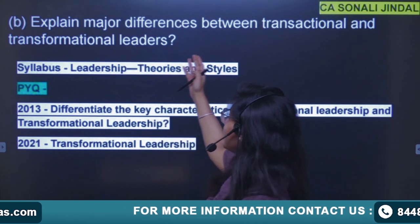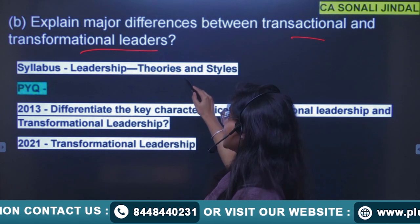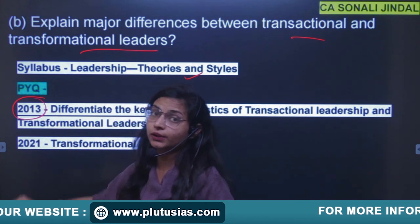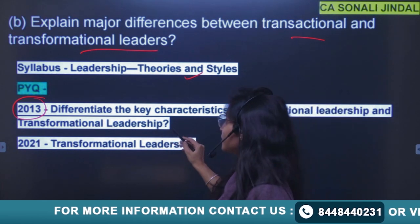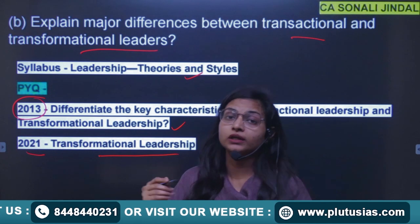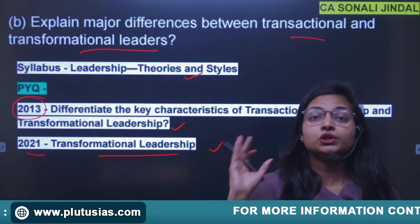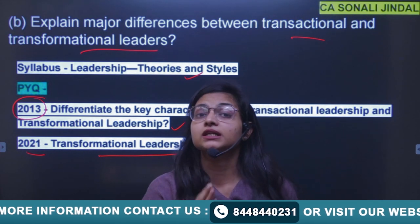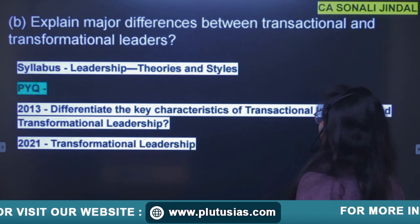The next question asks to explain the major differences between transactional and transformational leadership. In the syllabus, it is mentioned as leadership theories and styles. The same question was asked in 2013 — differentiate the key characteristics of transactional and transformational leadership — and in 2021 they also asked about transformational leadership. I have always told you: try to cover previous years from 2013 to 2024. The same questions will definitely appear. If you have already made notes, you will need only one to two minutes to write the answer.